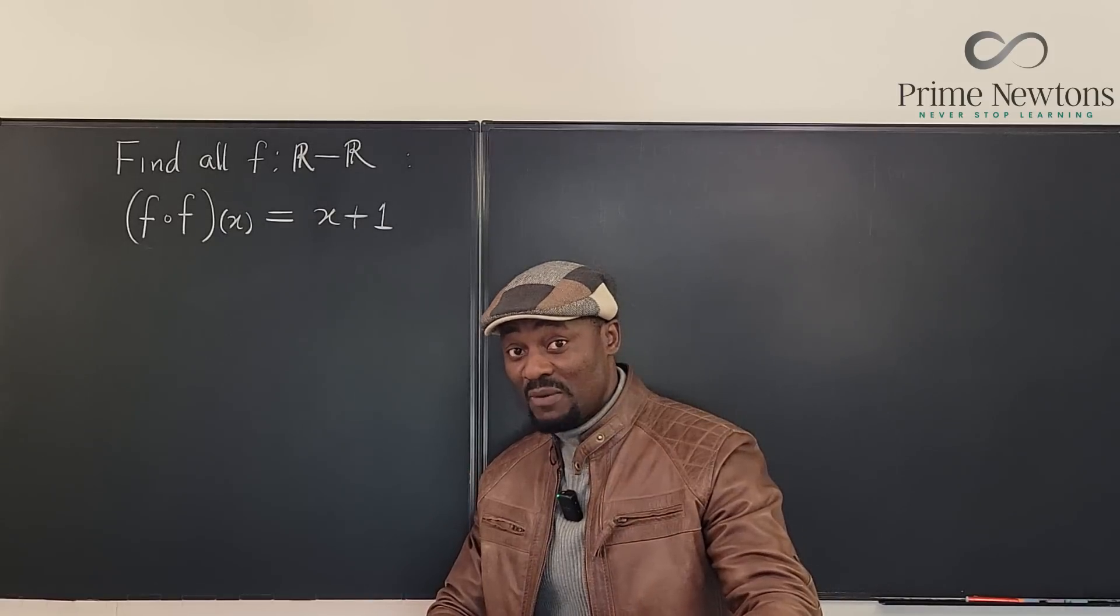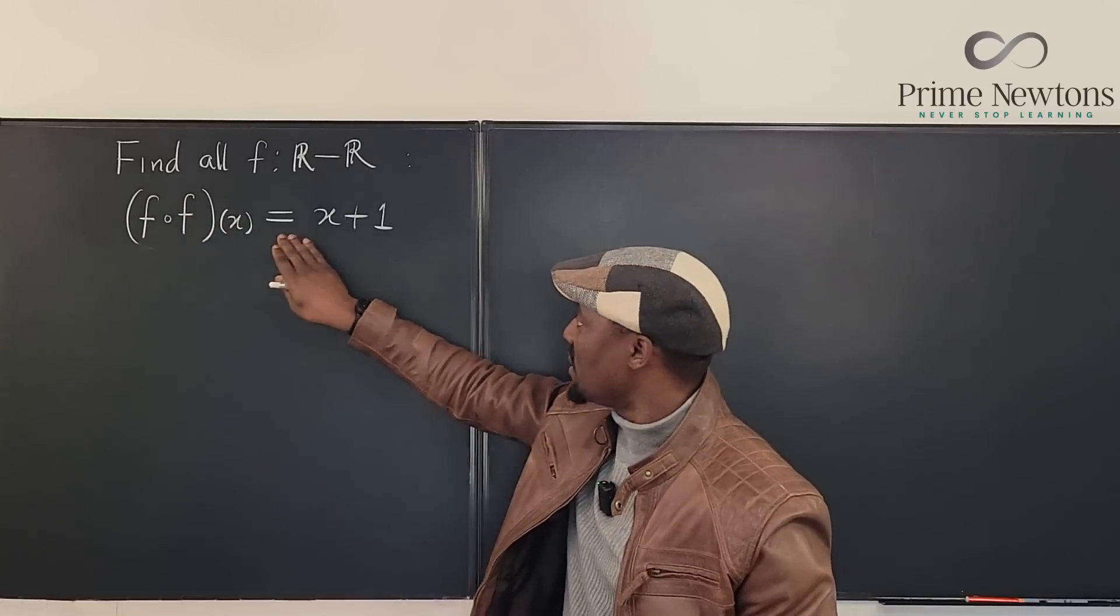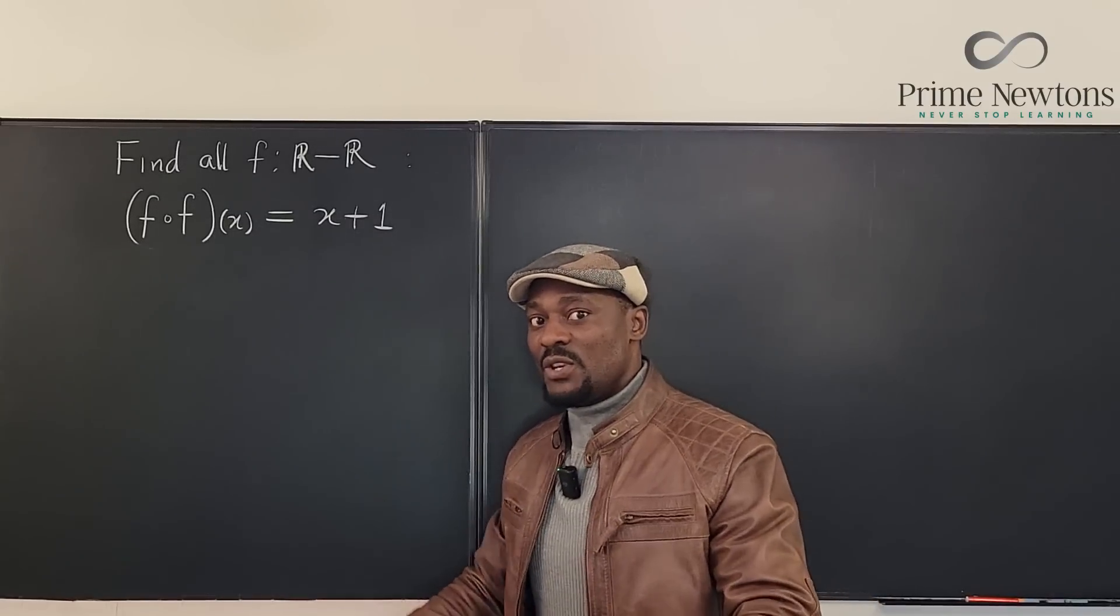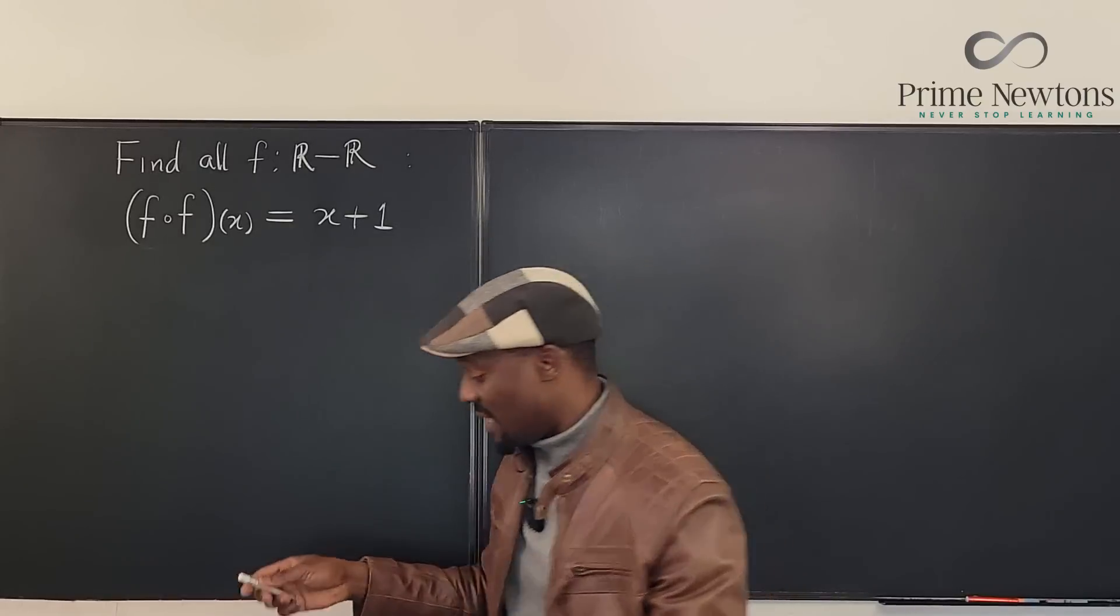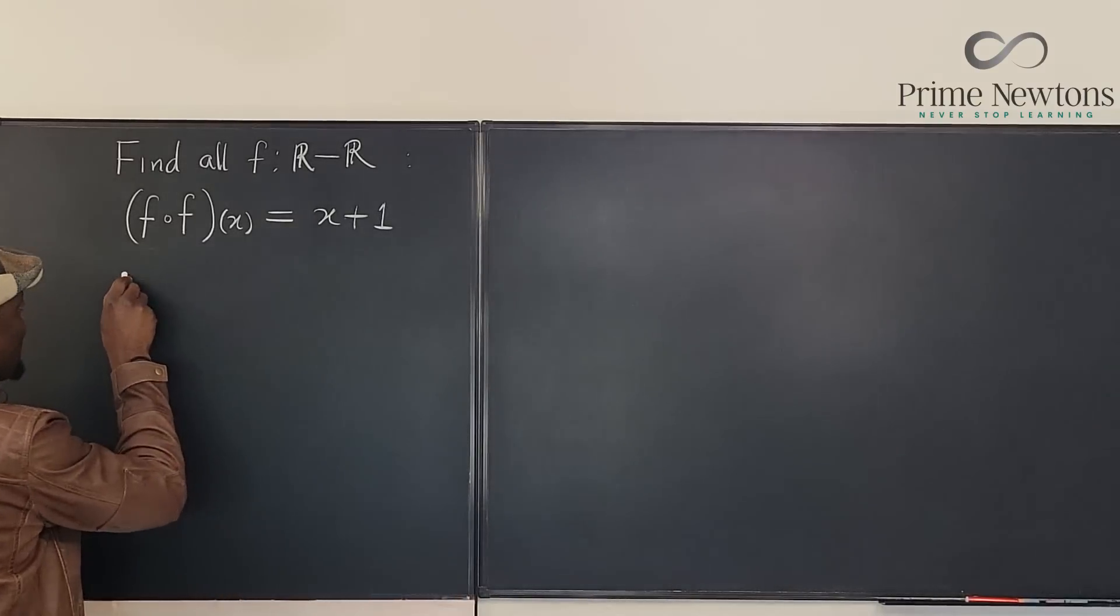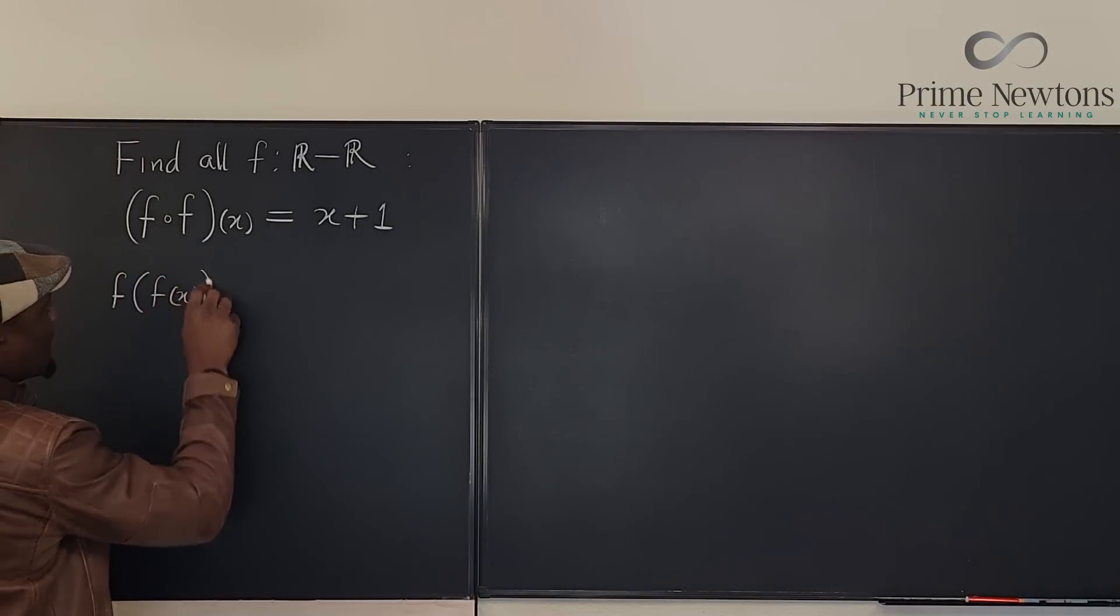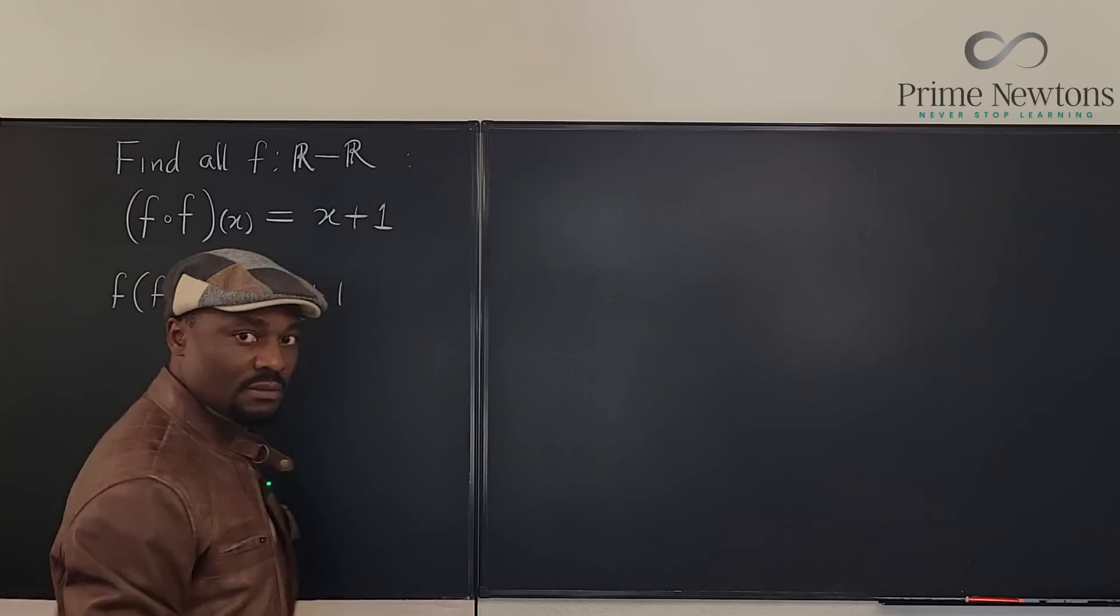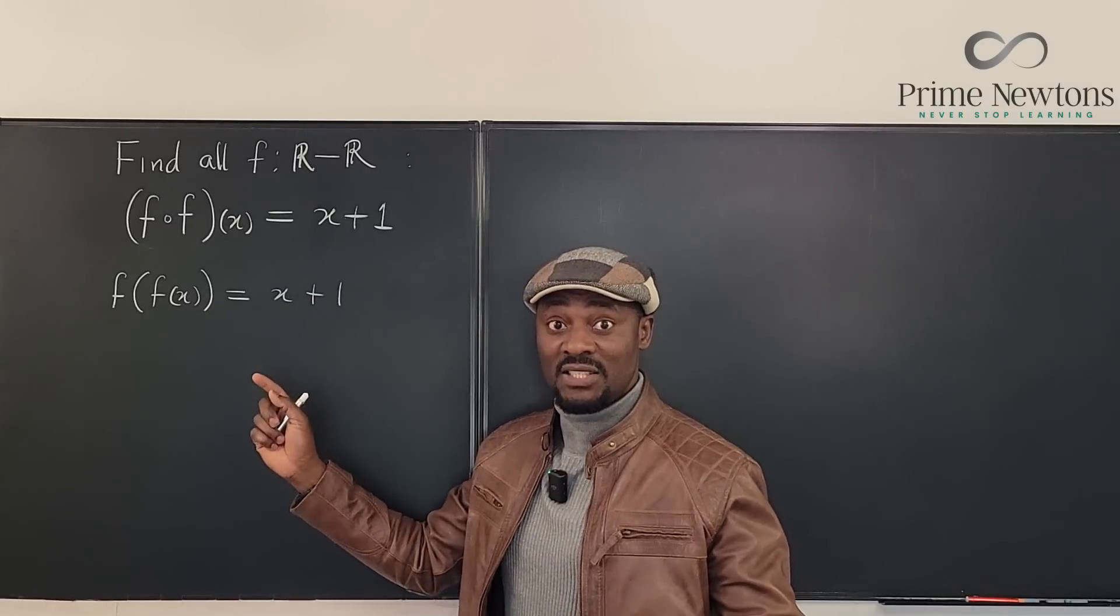So this is the problem we've got. It is the composition of f with itself will always give you x plus one. So this might be hard for you to figure out until you know that this notation is the same thing as this. f of f of x is equal to x plus one.